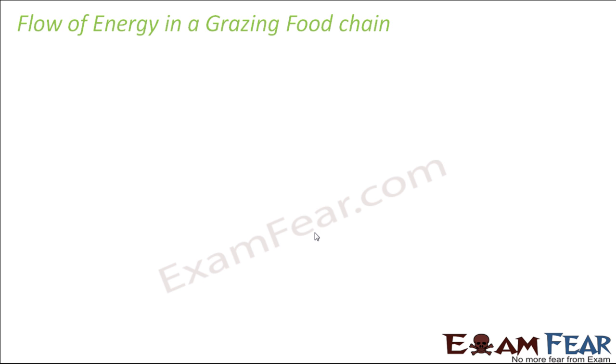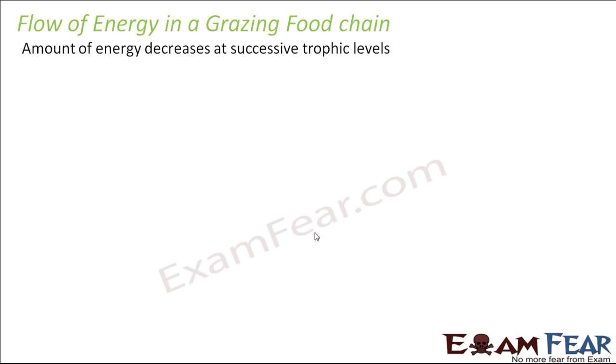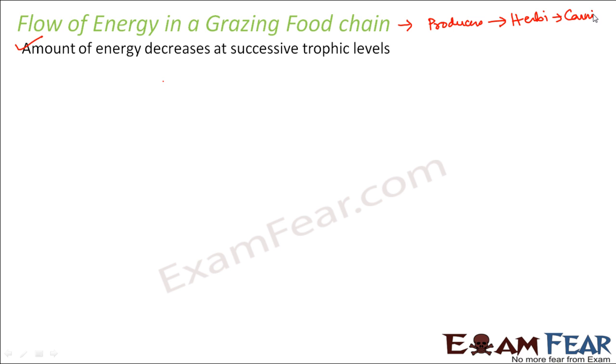We already saw how different organisms are dependent on each other for food, and food is something that gives us energy to do work. So whenever we consume food we get some energy. This amount of energy decreases at successive trophic levels. In a grazing food chain, producers are eaten by herbivores, and herbivores in turn are eaten by carnivores.